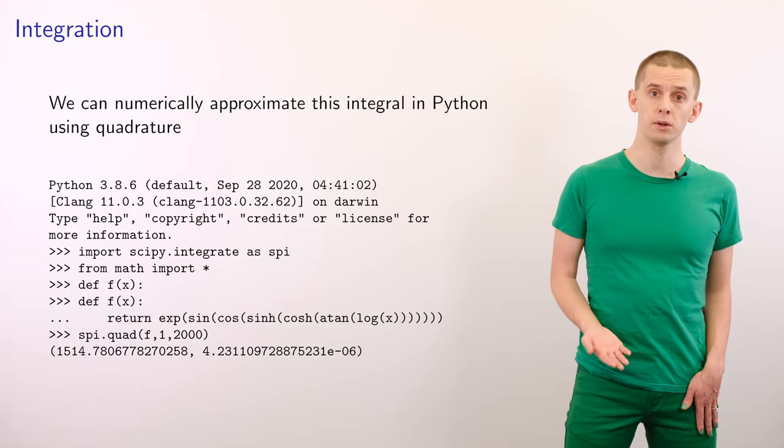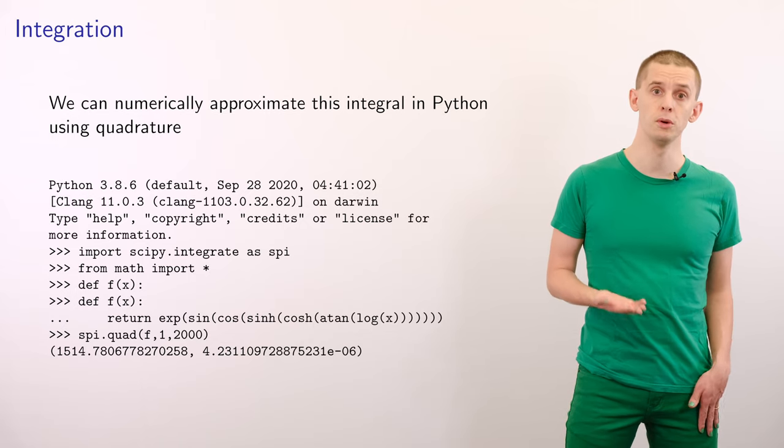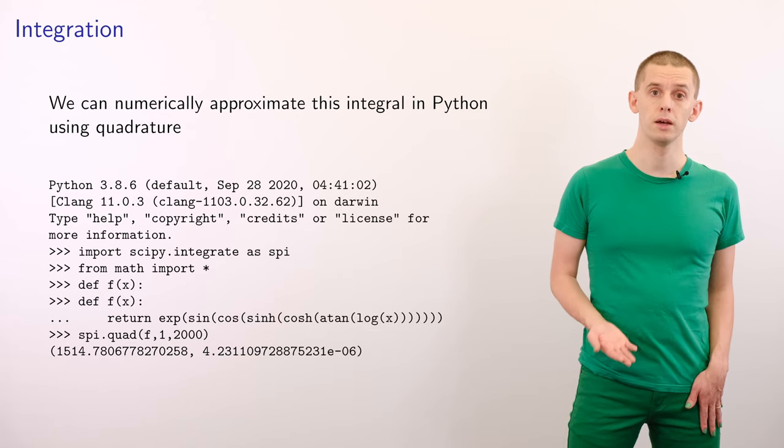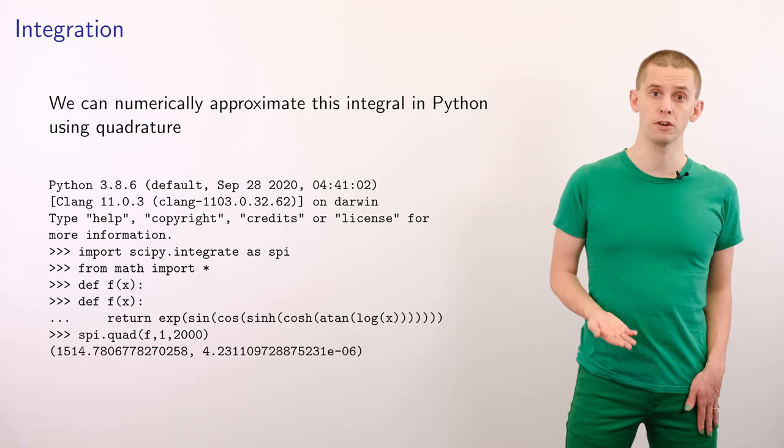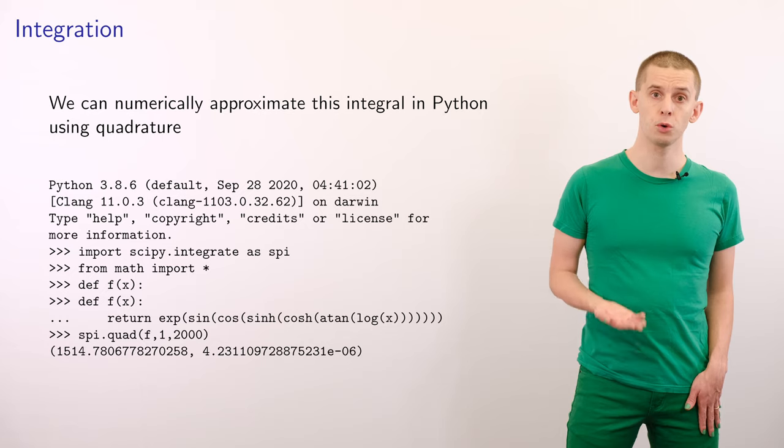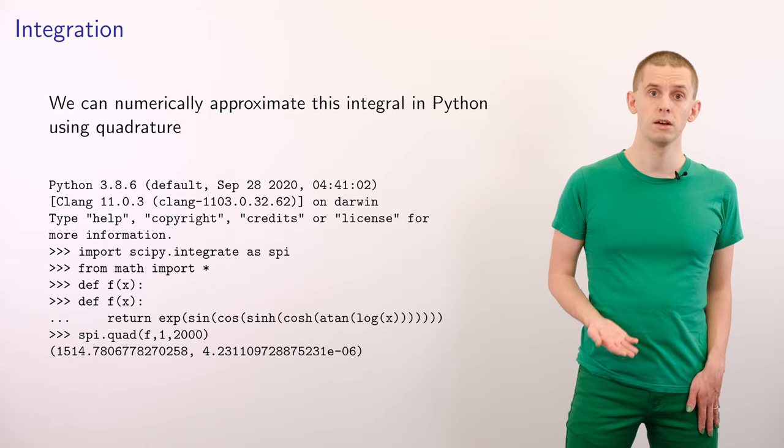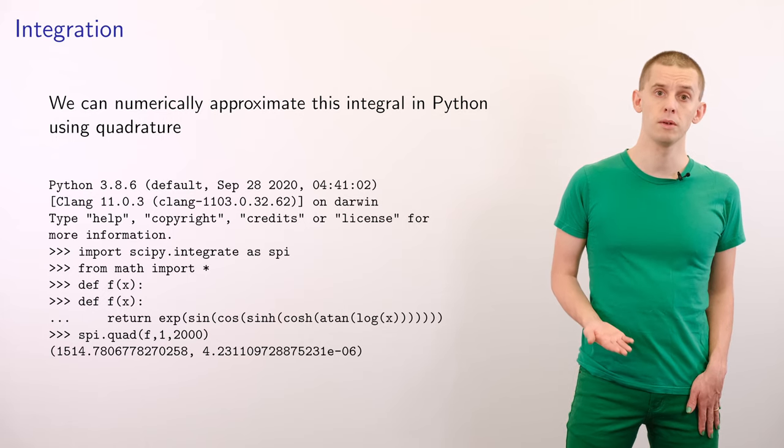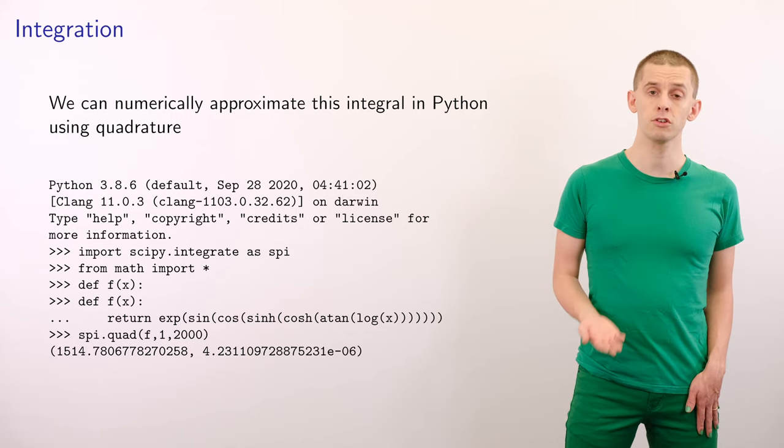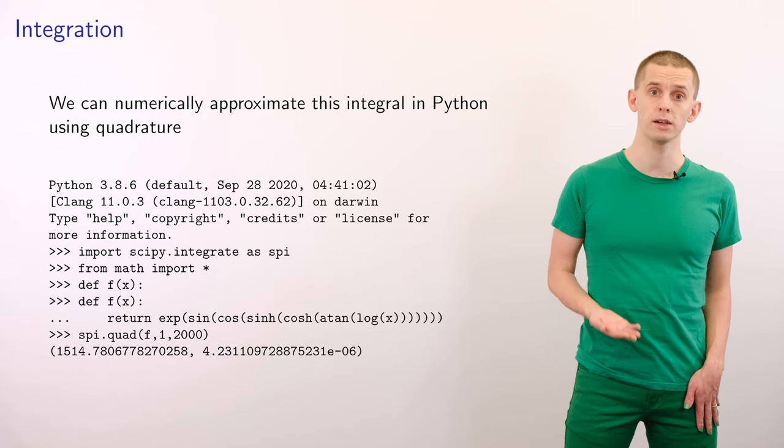However, this is something that we can do straightforwardly in Python. Here I'm showing a few lines of Python that we can use to perform this integral. We can make use of the SciPy Integrate module. Here I've defined this function as f(x) within the code. I then make a call to the quad routine within the SciPy Integrate module, and this passes back two results. The first one is the value of the integral, and the second one is the error estimate for the integral. Just as in previous parts of this course, it's often really helpful for us to have ways to estimate the error associated with our calculations.